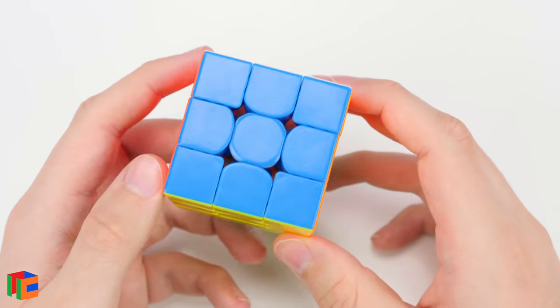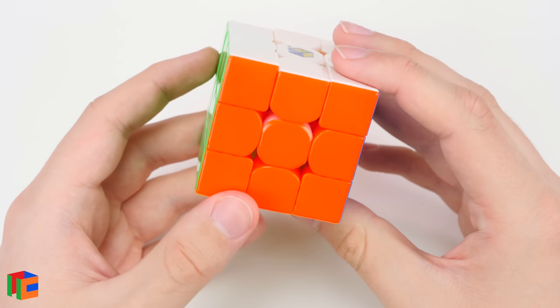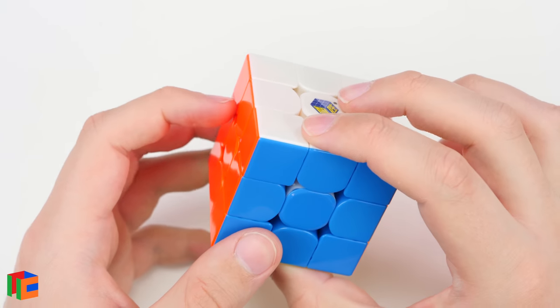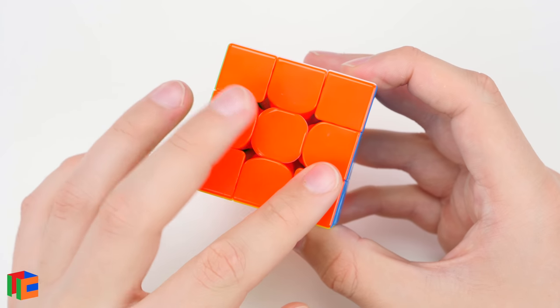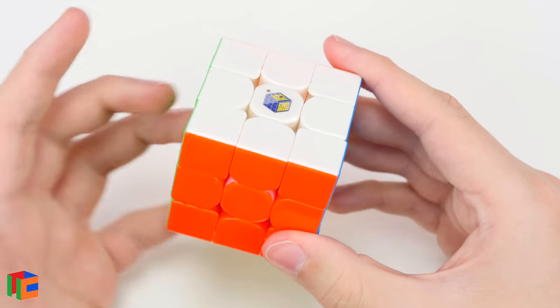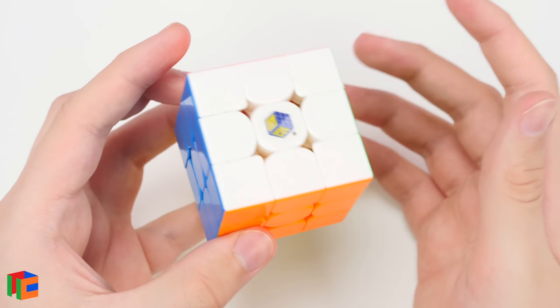Something I'm noticing right off the bat is that the stickerless shades are quite a bit brighter than the Yuxin Little Magic M, which is something that I'm not a huge fan of, honestly. I prefer a darker red, and they're also totally glossy, whereas the Yuxin Little Magic had a matte finish. It depends on whether or not you like that. It's also a pretty light cube. Anyways, let's go ahead and turn it.